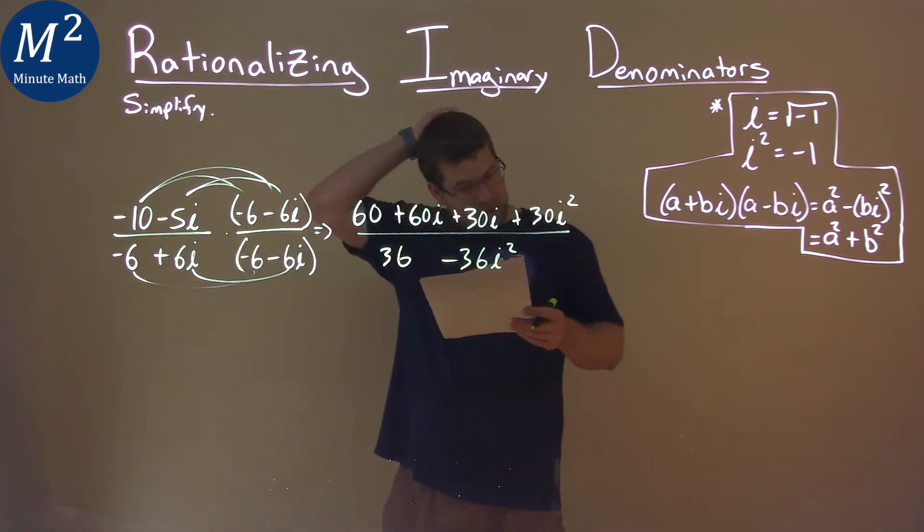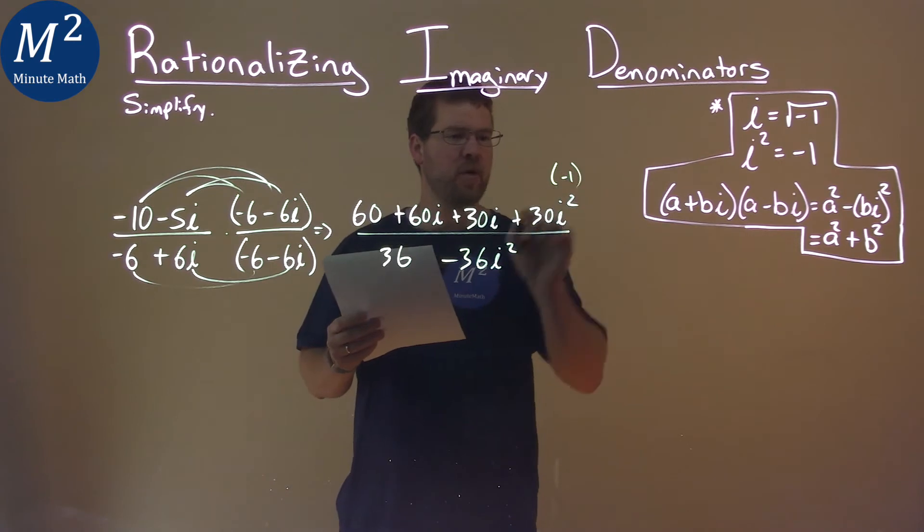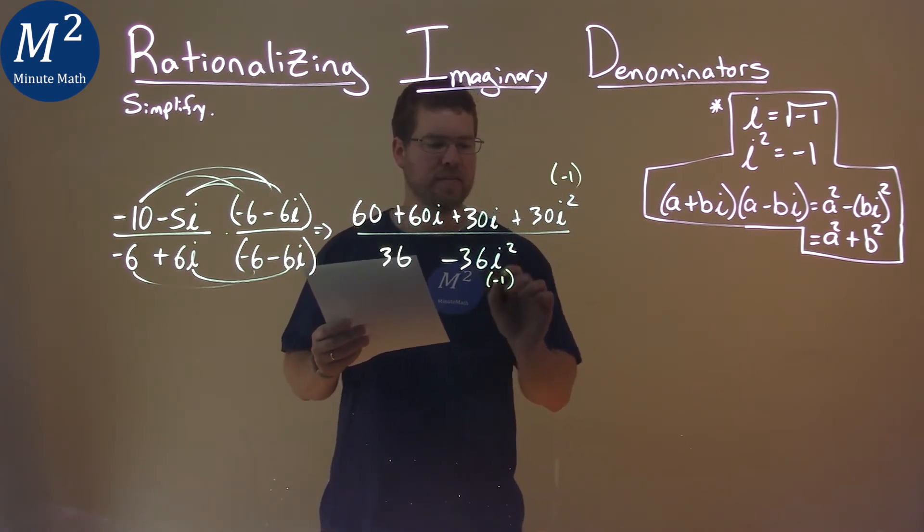Okay. So where can we go from here? What do we know about i squared? i squared is just negative 1, so we'll use negative 1 instead of i squared.